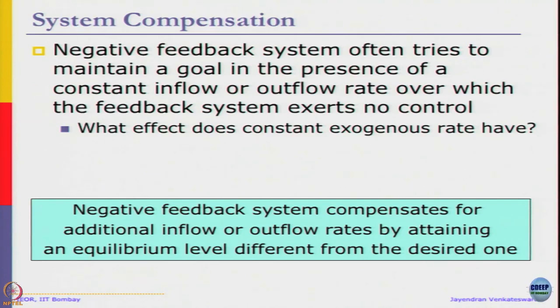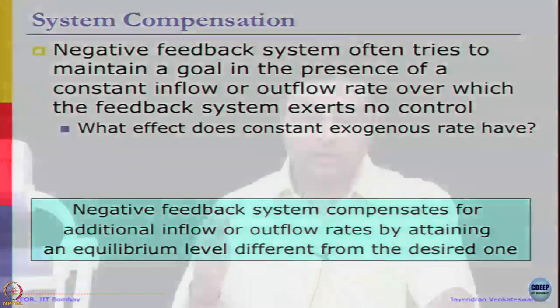Though we have a goal, the system — because of the constant exogenous variable — will actually come to an equilibrium different from the goal, as we will see using an example. Before going into the analytical version, let us take our laptops and expand the labor model that we did yesterday in the face of a constant exogenous outflow.